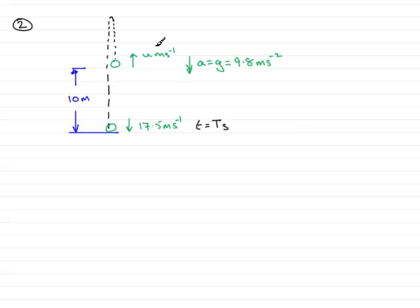Now for part A, we've got to find out u. And being a SUVAT type equation, I'm going to write down the various variables s, u,